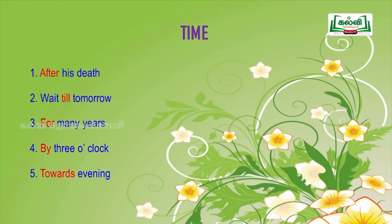Next, prepositions with time. 'After his death' — after is the preposition; it denotes time, not place. 'Wait till tomorrow' — till is the preposition. 'For many years' — for. 'By three o'clock' — by. 'Towards evening' — towards. Students, you can understand the prepositions while reading the sentence itself.